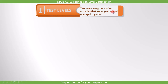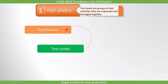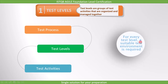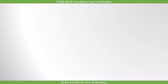Let's start with the definition — what are test levels? Test levels are groups of test activities that are organized and managed together. Here is the test process: this test process will have different test levels, and the test levels will have different test activities inside them, organized and managed together to achieve the objective. For every test level, a suitable test environment is required — component testing and system testing require two different test environments.